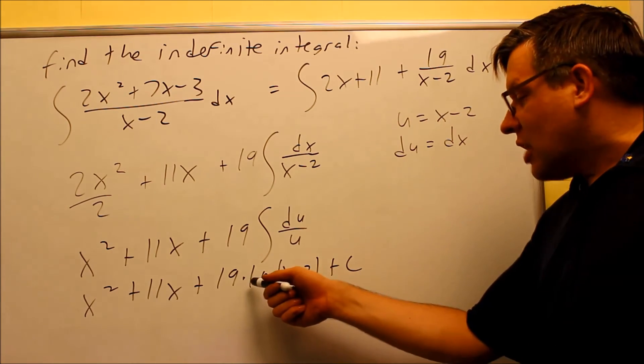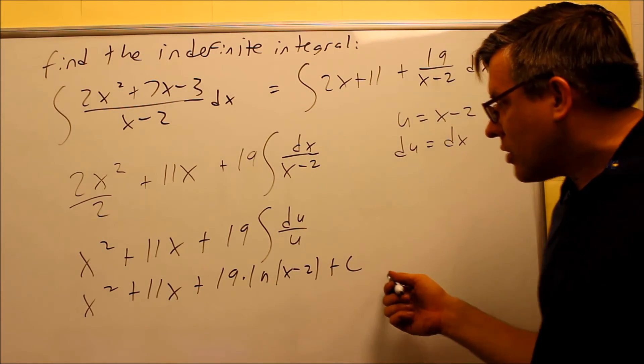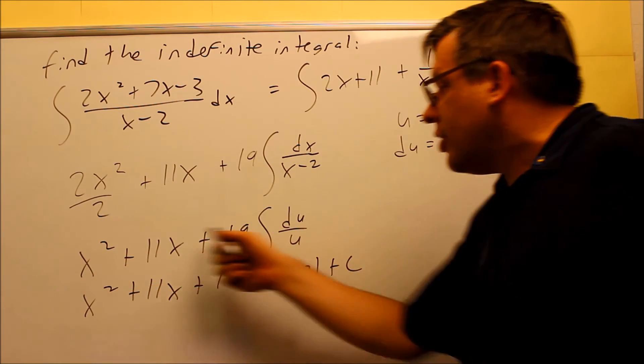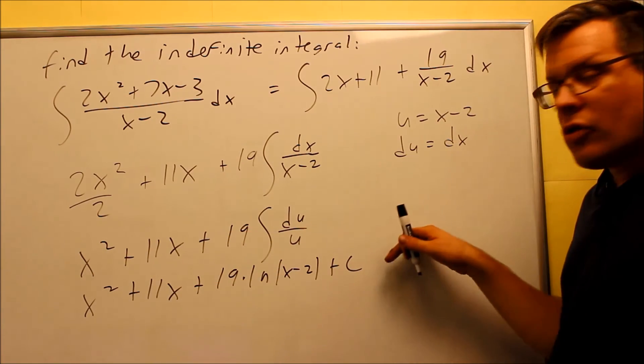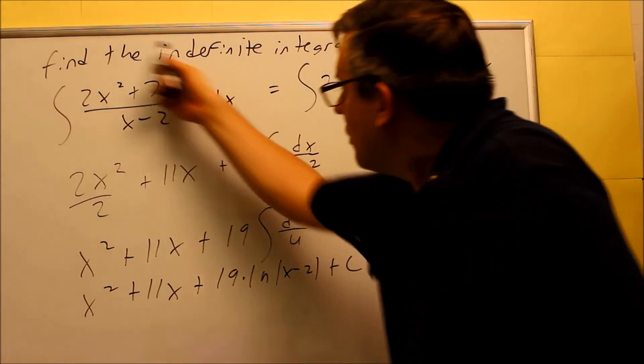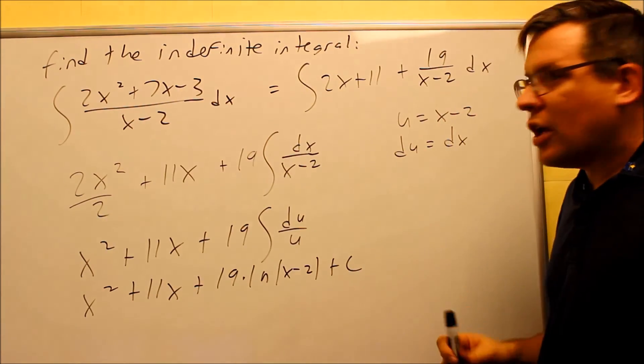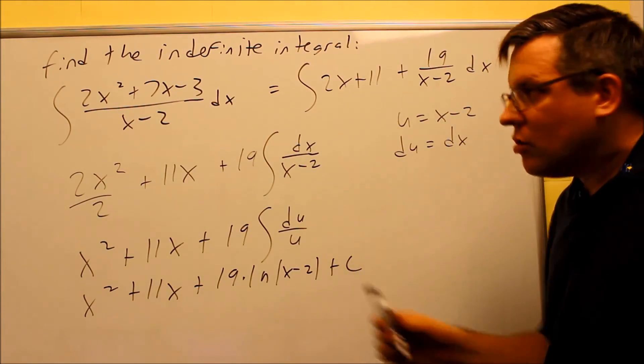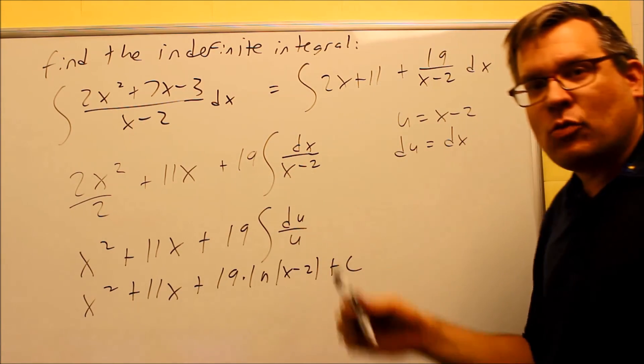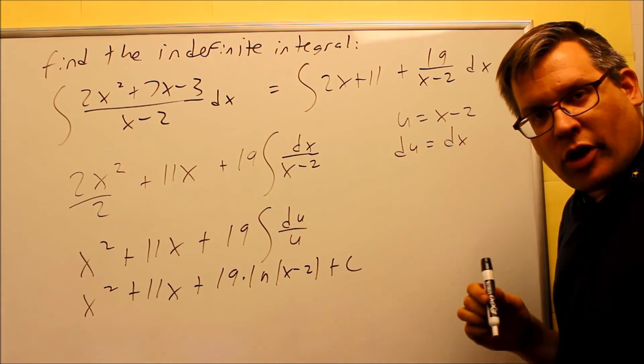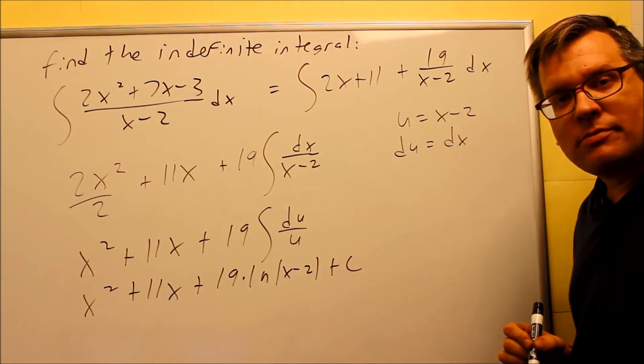So I have 19 times natural log x minus 2 plus c. This would be your whole answer, and this whole thing then would be the integral of the original problem. So again, long division is what you might have to do if you have a higher power on top, and when you originally work with the u's, if it doesn't work out that way, then sometimes long division might help.